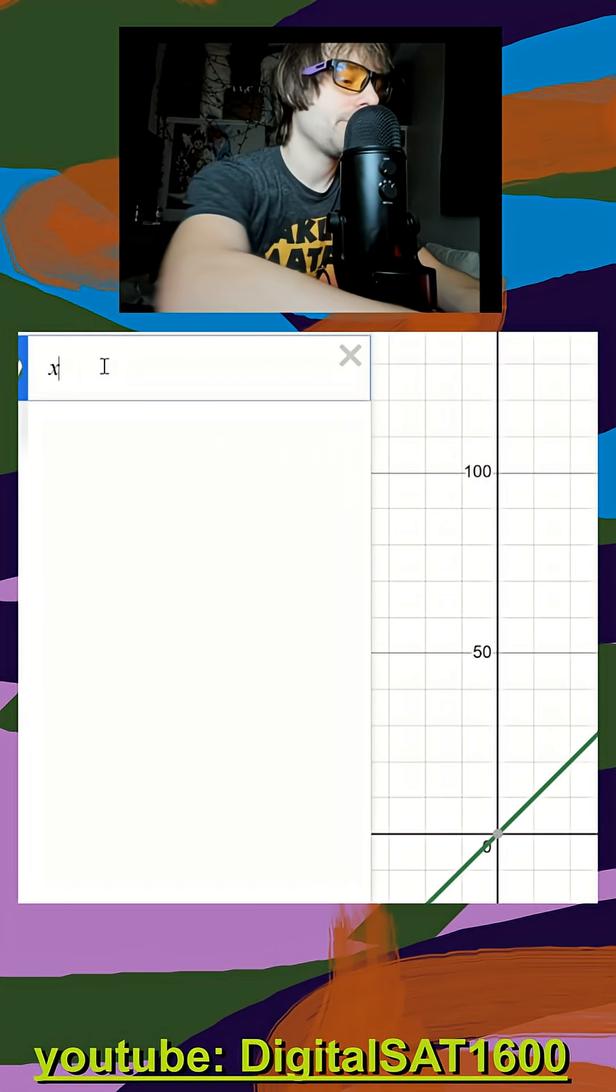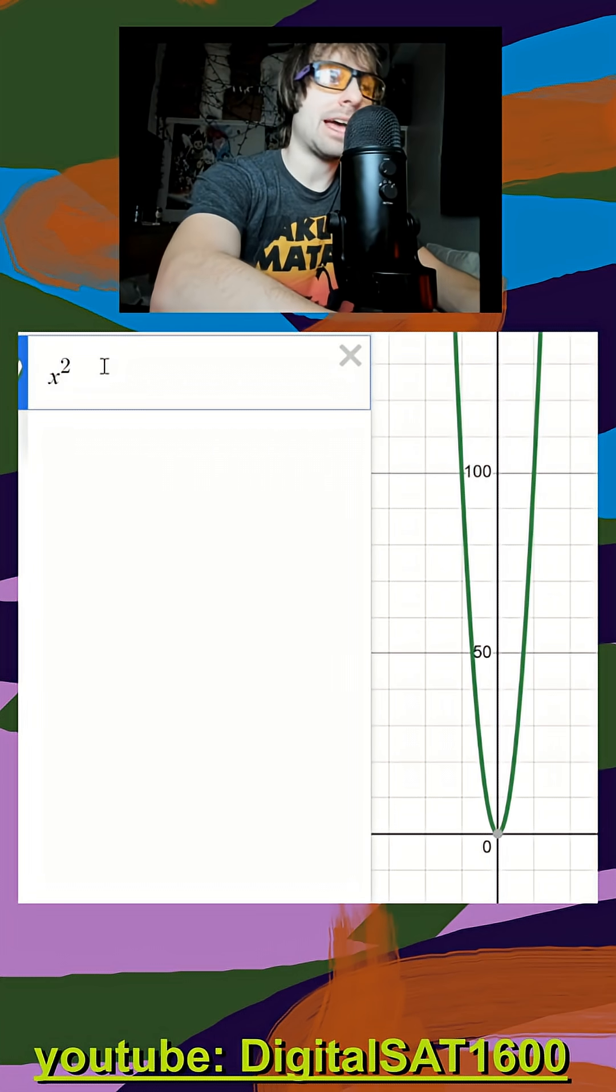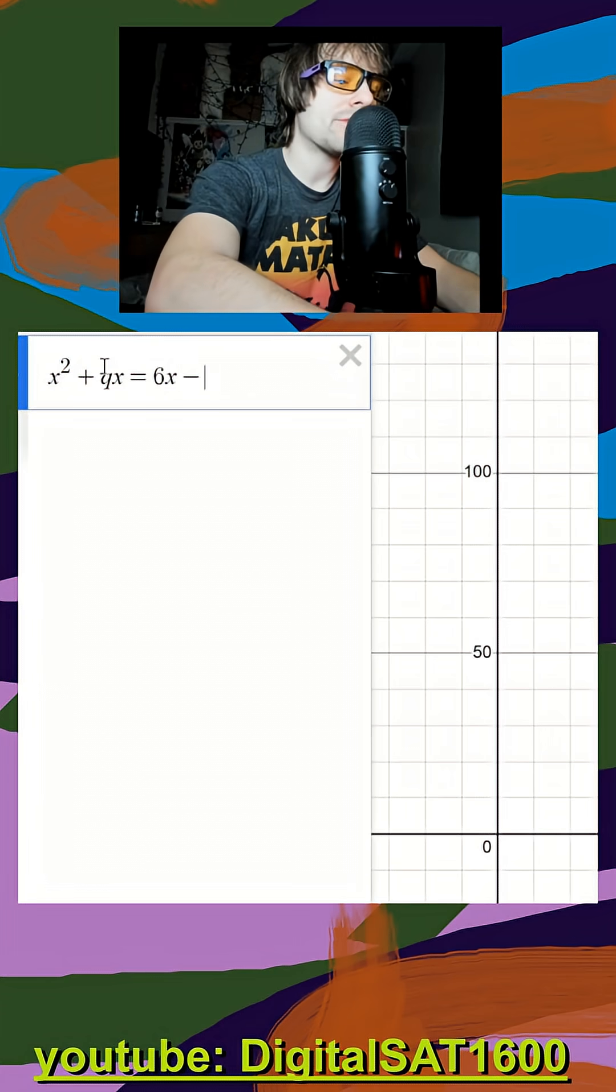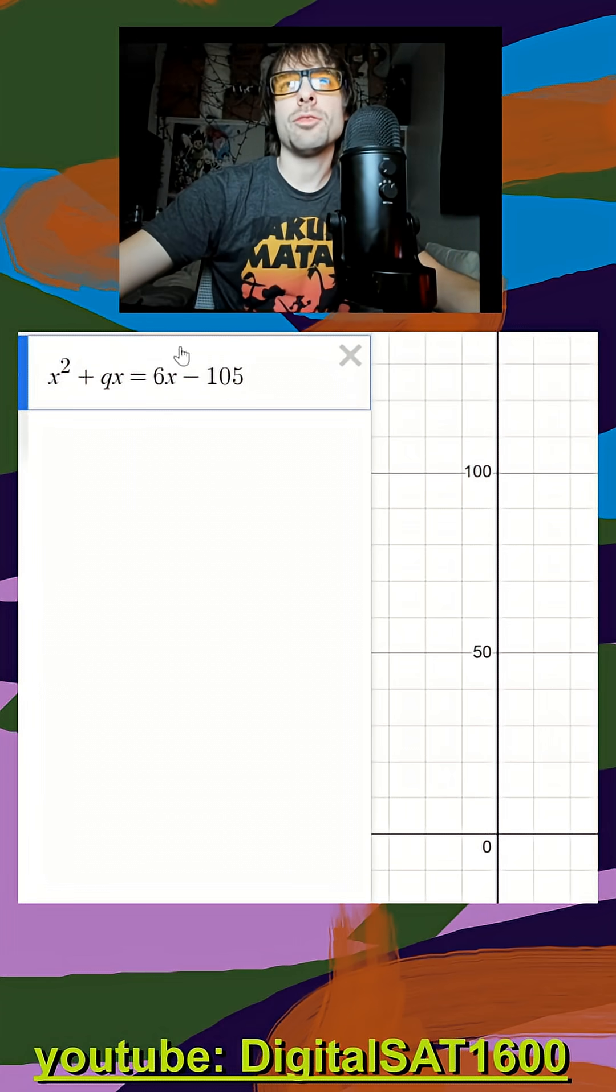So open up Desmos here, and I replace my t with x because it's not a constant. And we're going to have a strategy here, and that is we want to get everything to one side of our equal sign.